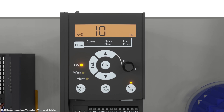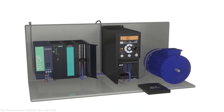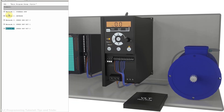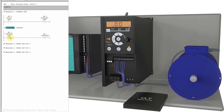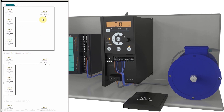Now let's go to the Simatic Manager software and discuss how the ladder logic works for this application. In network 1, when we turn on the start bit M0.0 it turns on PLC output Q0.0, activating the run command bit of the VFD. In network 2, when we turn on reverse command M0.1 it turns on Q0.1, activating the reverse command bit of the VFD. Network 3 controls speed reference bit 0, network 4 controls bit 1, and network 5 controls bit 2.